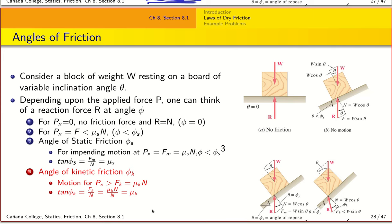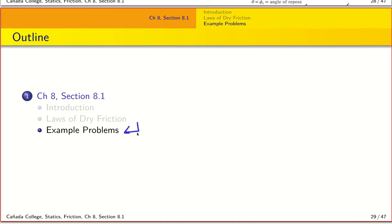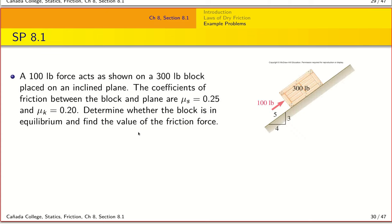Once the block starts sliding, you can reduce the slope angle back down to a smaller value and still maintain sliding motion. This angle at which you can reduce to and still have sliding is called the angle of kinetic friction φk. Similarly, tan(φk) = FK / N = μk, the coefficient of kinetic friction.